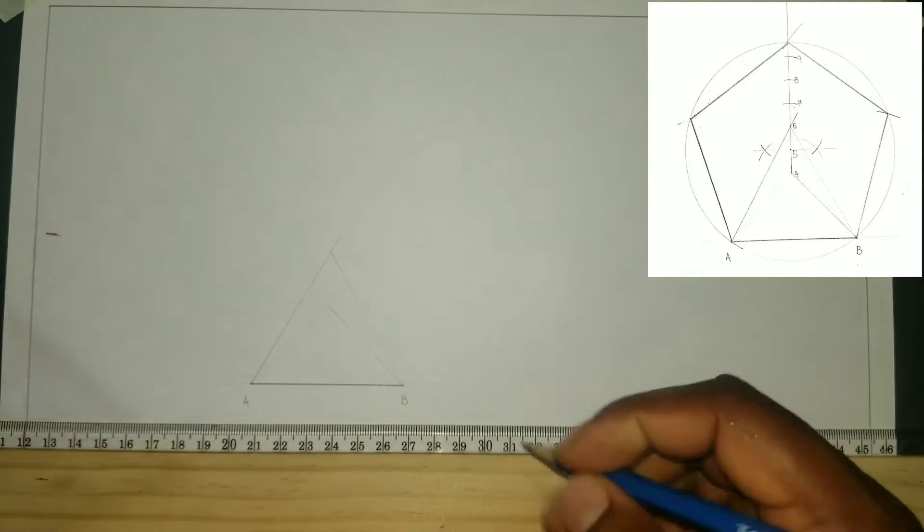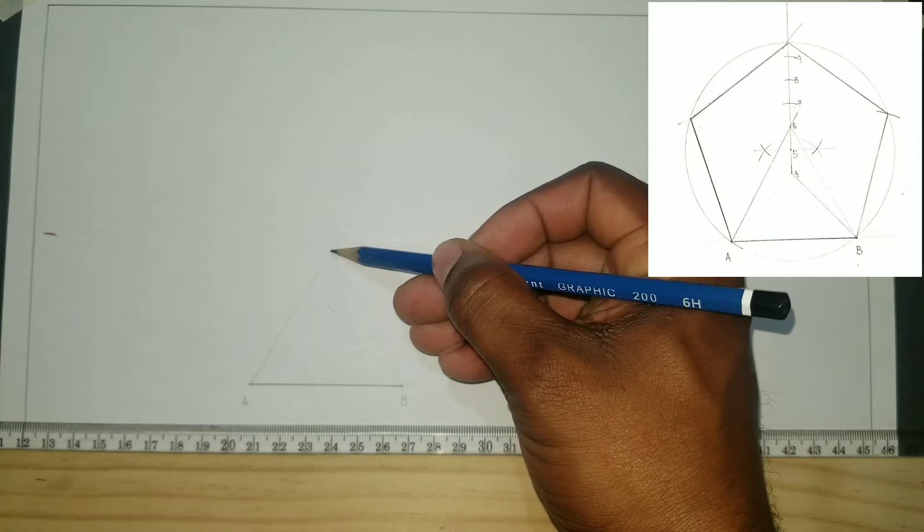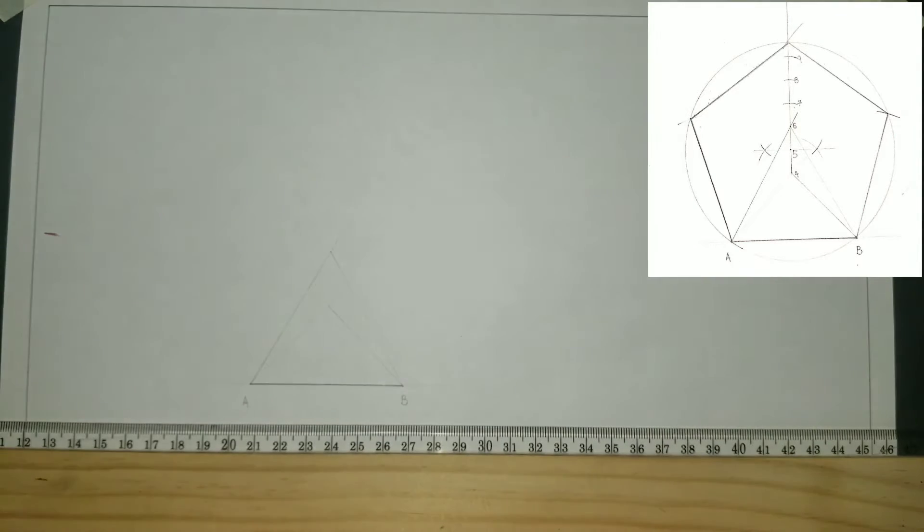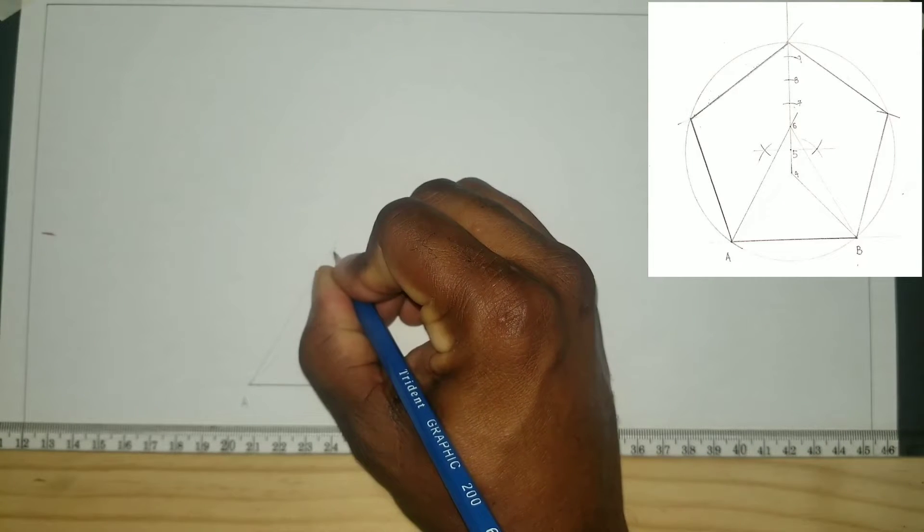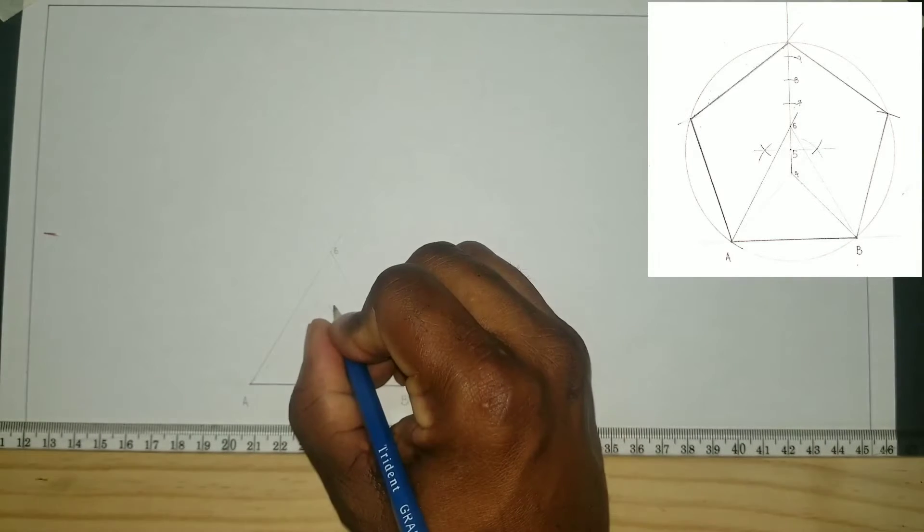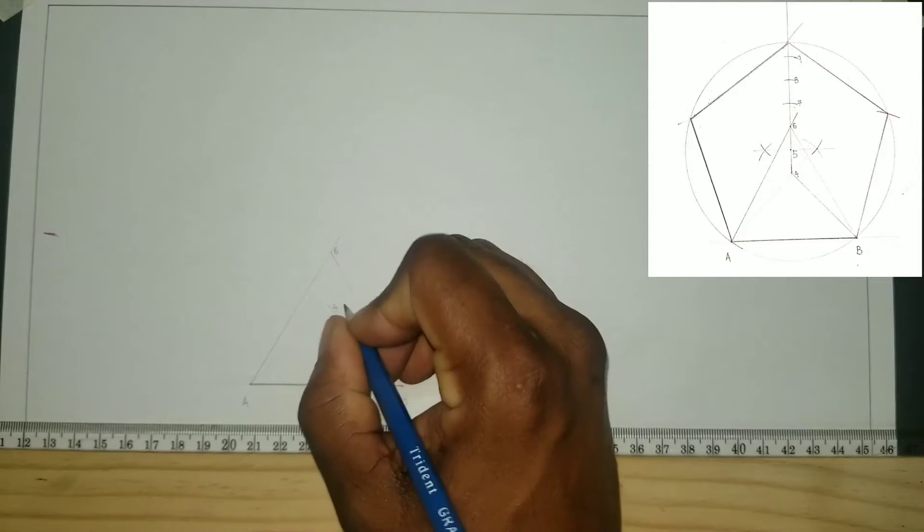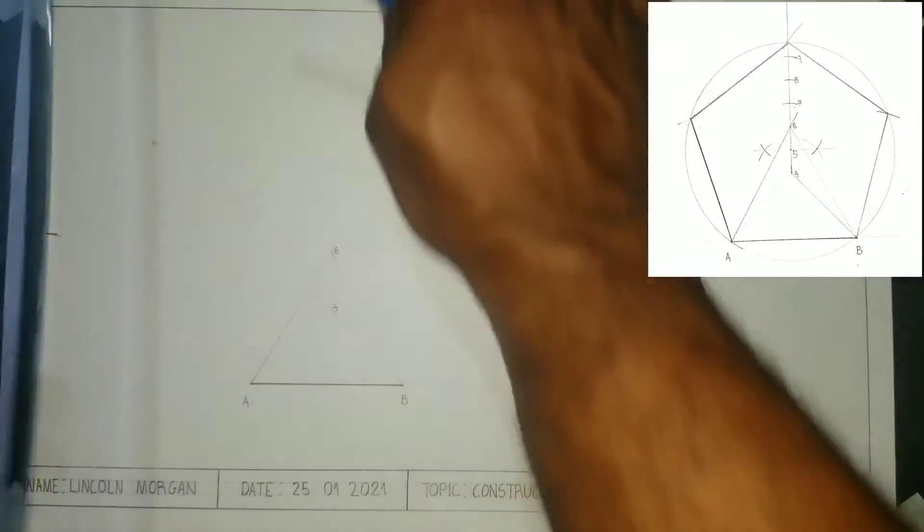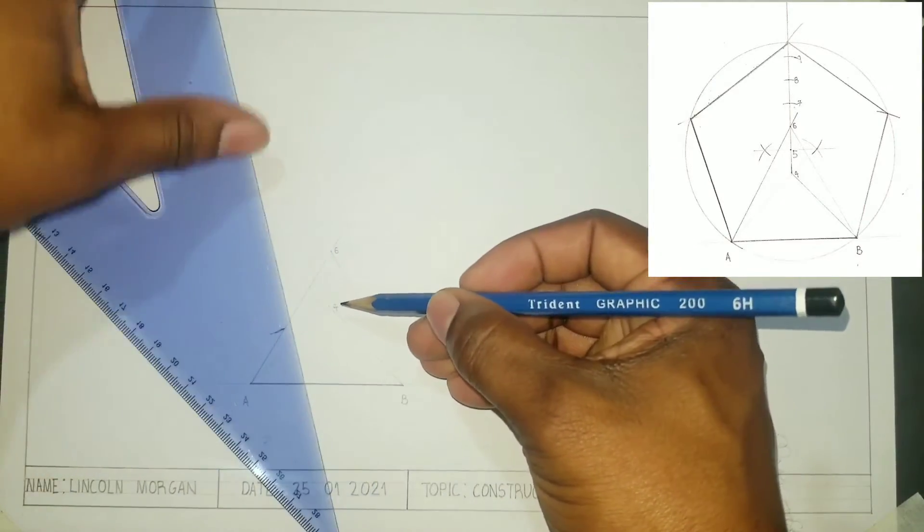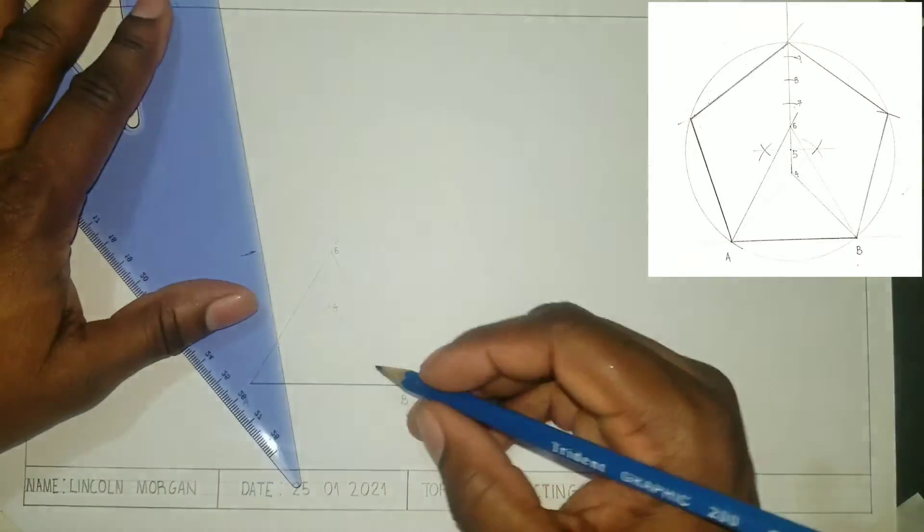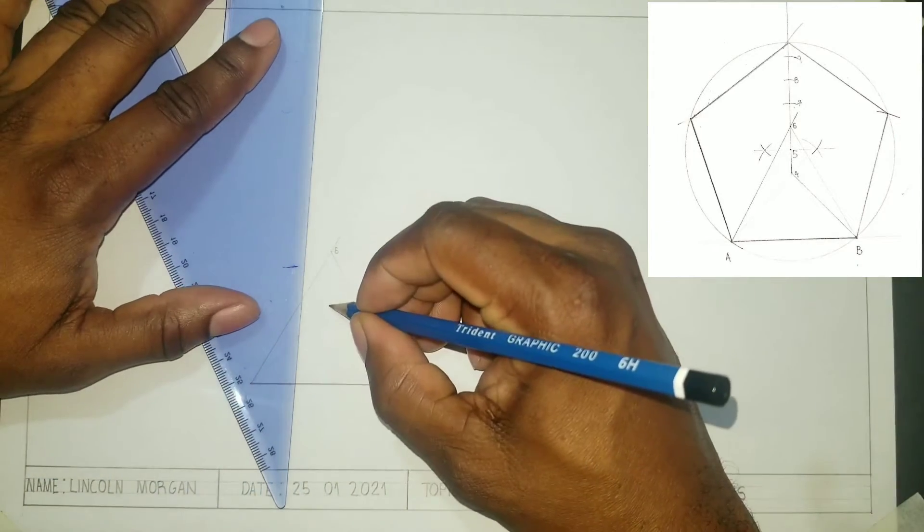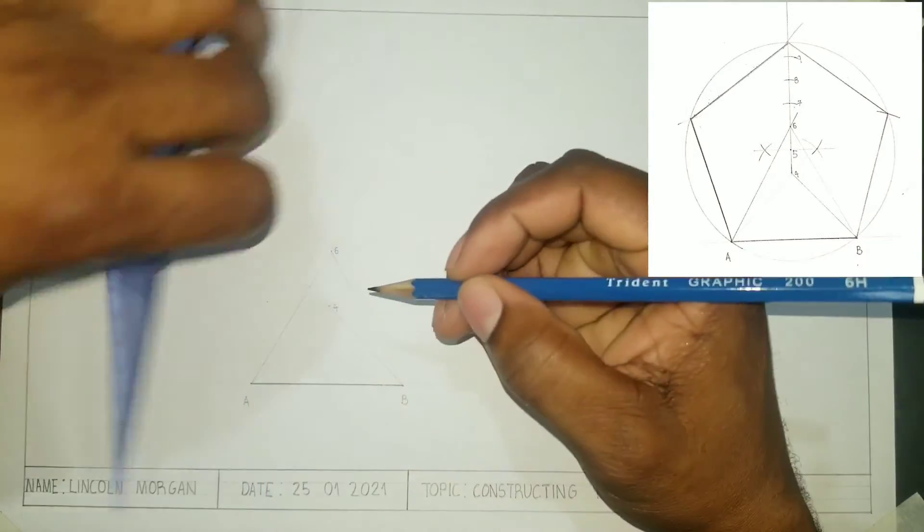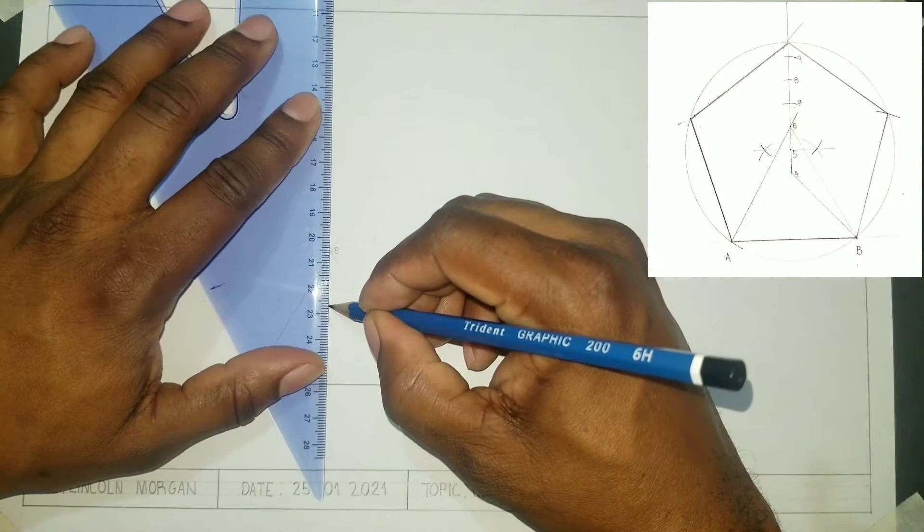We will label this intersection as point 0.6 and this point as 0.4. We will now draw a line from 0.4 through 0.6.